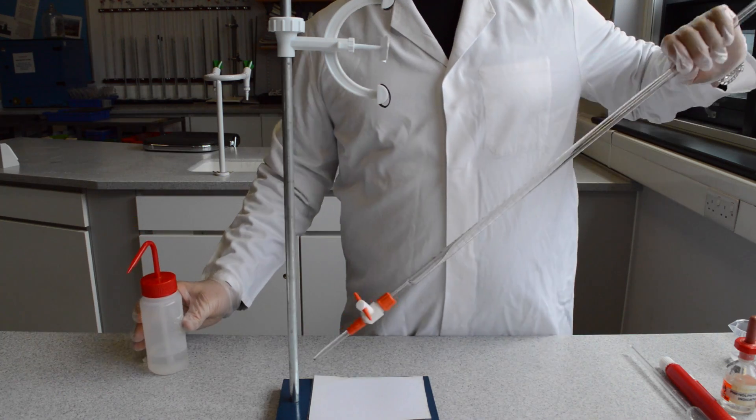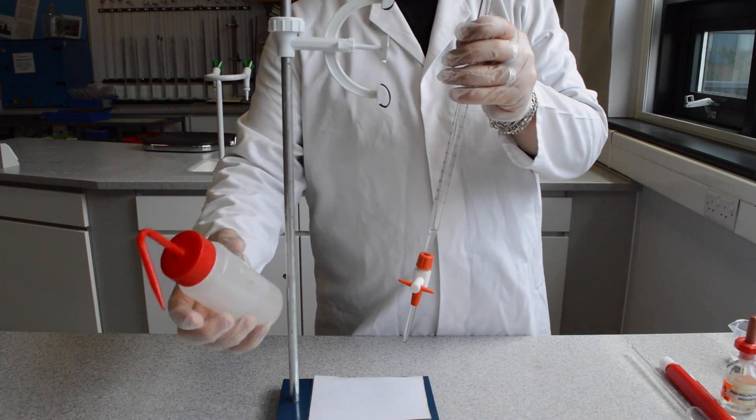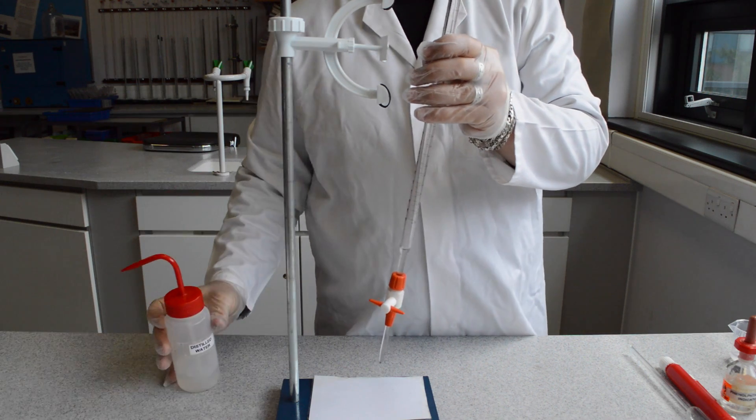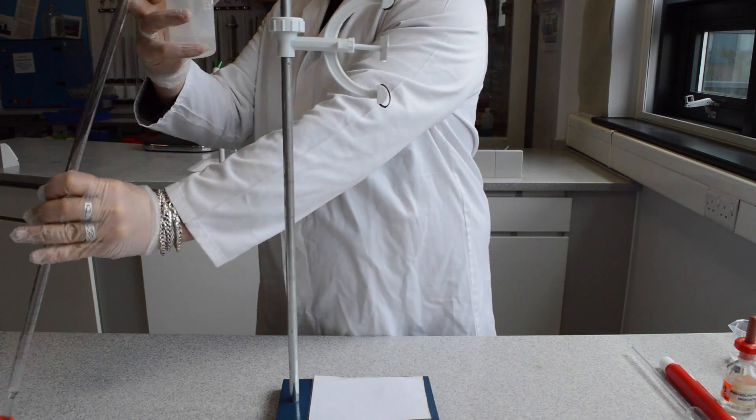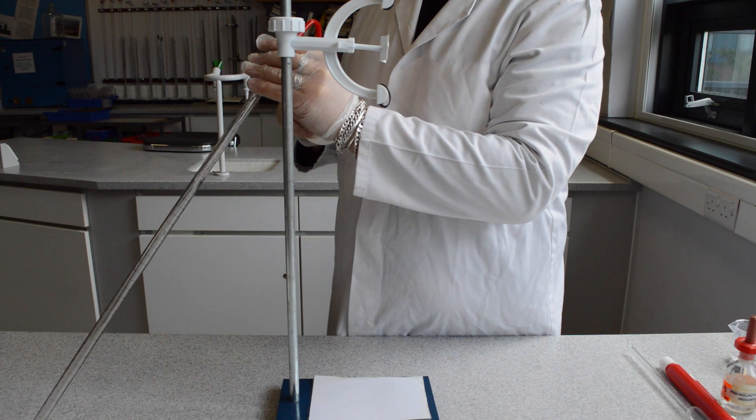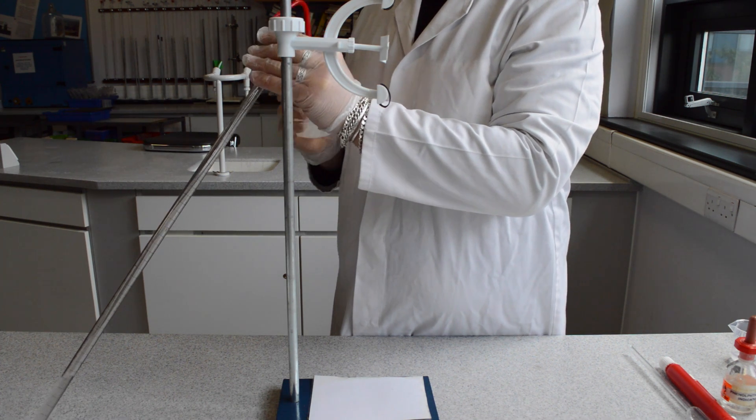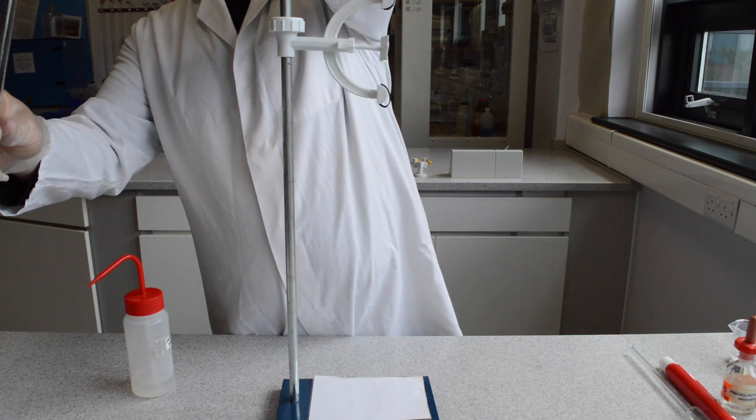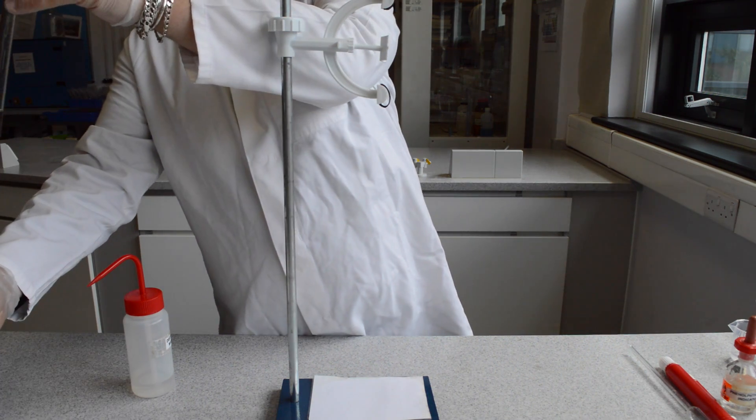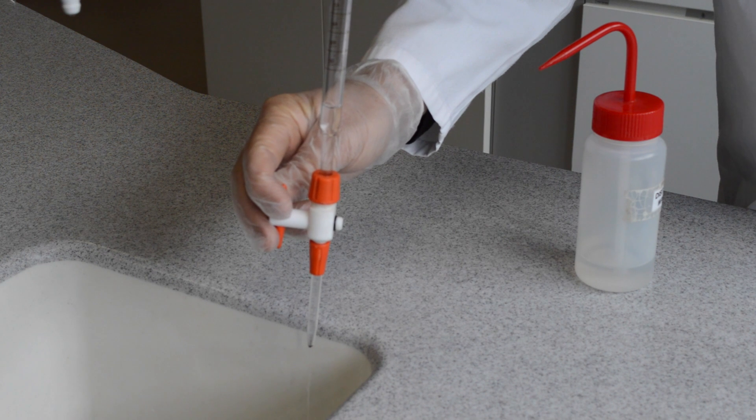When cleaning the burette, it must be rinsed down with distilled water. This can be done straight into a sink with the burette tap open. If the burette tap is closed, release the tap and ensure all the contents has been drained out.